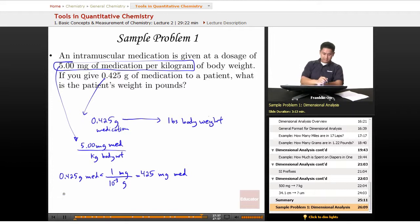We can then take the 425 milligrams of medication, multiply it by something over something, and that's going to give us our answer in units of body weight. And kilograms of body weight, excuse me.